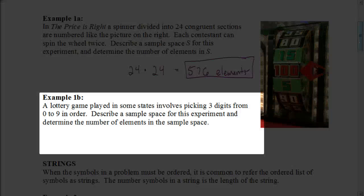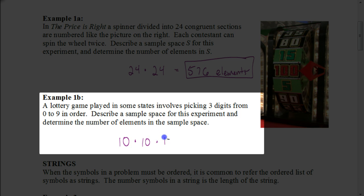A lottery game involves picking three digits from 0 to 9 in order. From 0 to 9, don't look too quickly — there are actually 10 numbers because you include 0. You can repeat the digits. So there are 10 choices for the first digit, 10 for the second, and 10 for the third, for a total of 1,000 elements in the sample space.